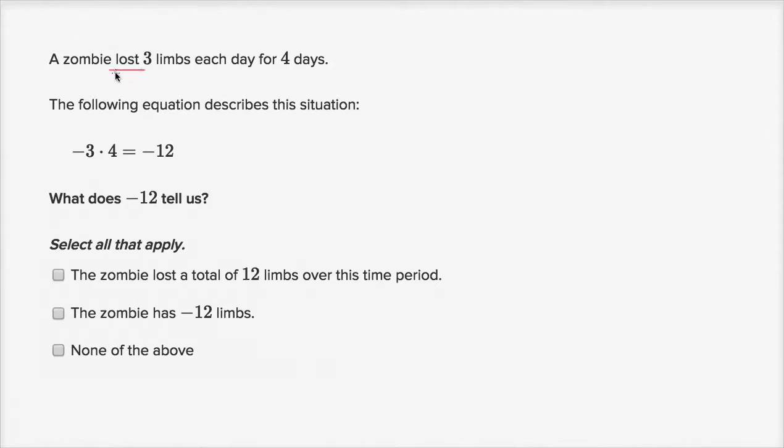So the zombie lost three limbs each day, so negative three could represent losing three limbs. The negative is, my number of limbs is going down by three. So this is negative three, and it's doing that for four days. And we have negative 12, which is the total number of limbs that our zombie loses. So what does negative 12 tell us? The zombie lost a total of 12 limbs over this time period. Yep, that looks right.